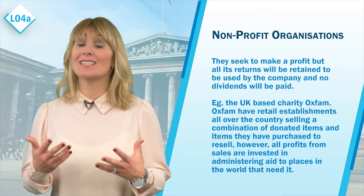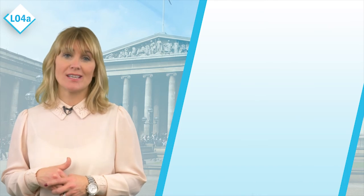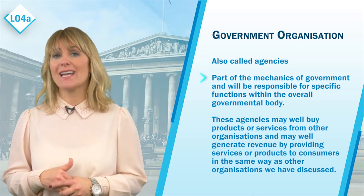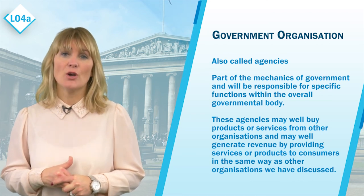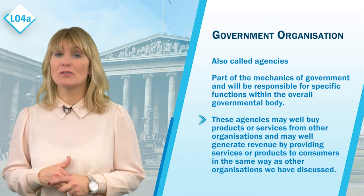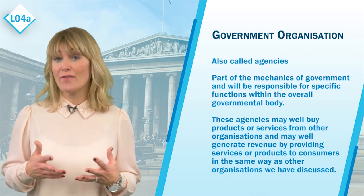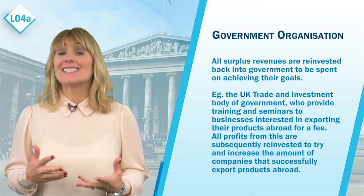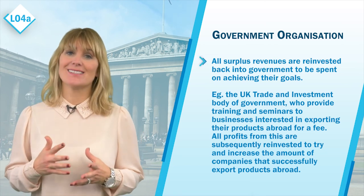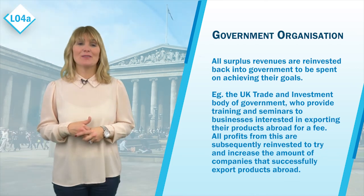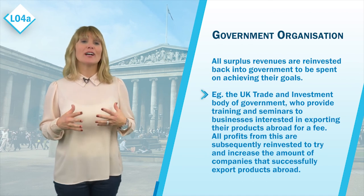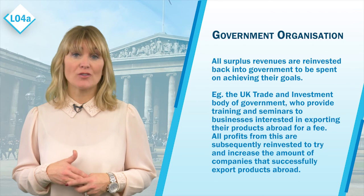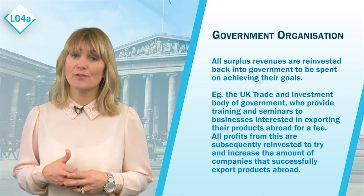The final type of organization to be aware of is the government organization, often known as an agency. This type of organization will generally be part of the mechanics of government and will be responsible for specific functions within the overall governmental body. These agencies may buy products or services from other organizations and may generate revenue by providing services or products to consumers. Similar to a non-profit organization, all surplus revenues are reinvested back into government to be spent on achieving their goals. An example is the UK Trade and Investment body, which provides training and seminars to businesses interested in exporting their products abroad for a fee, with all profits subsequently reinvested to increase successful exports.